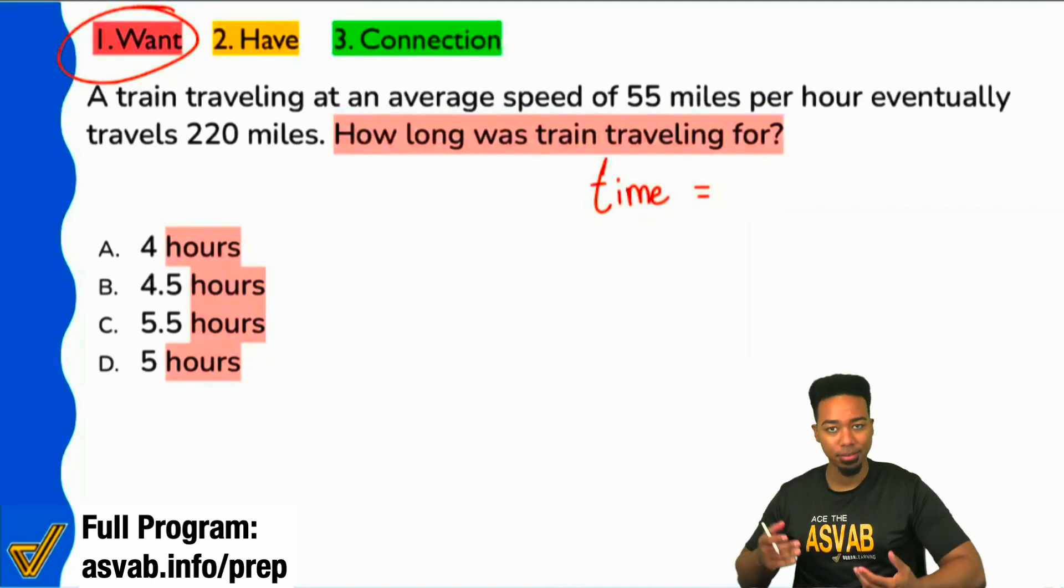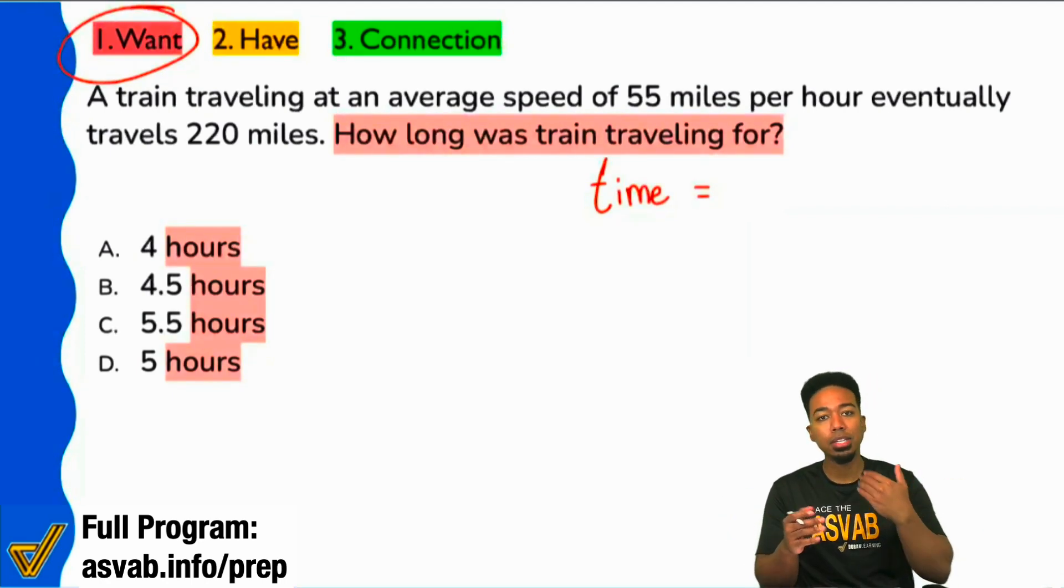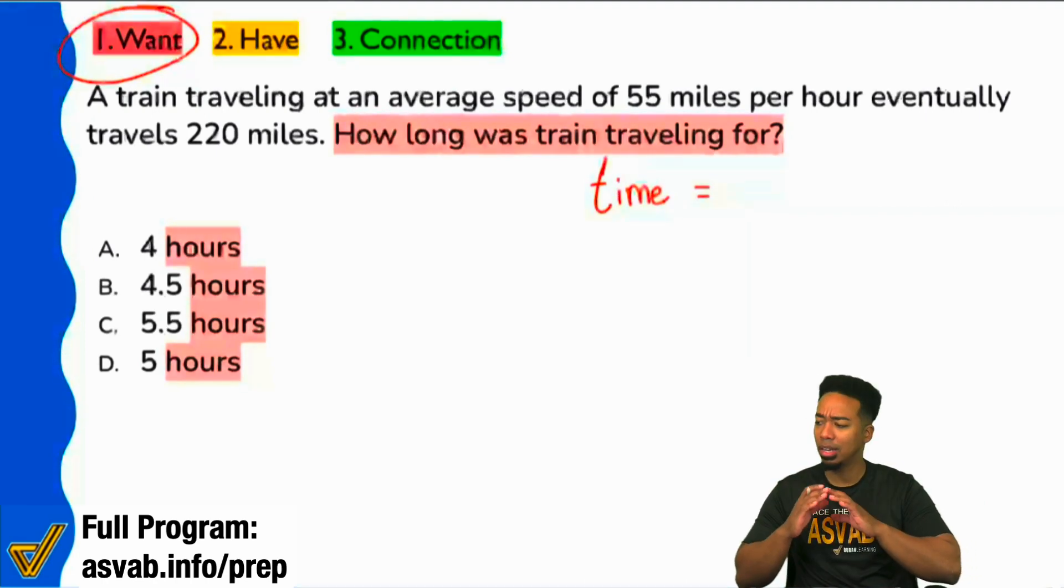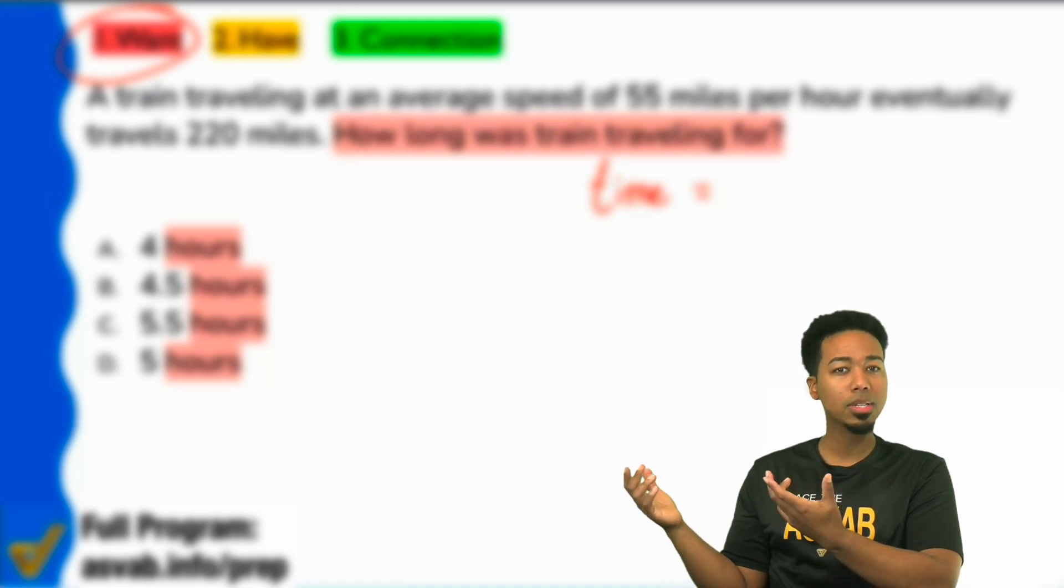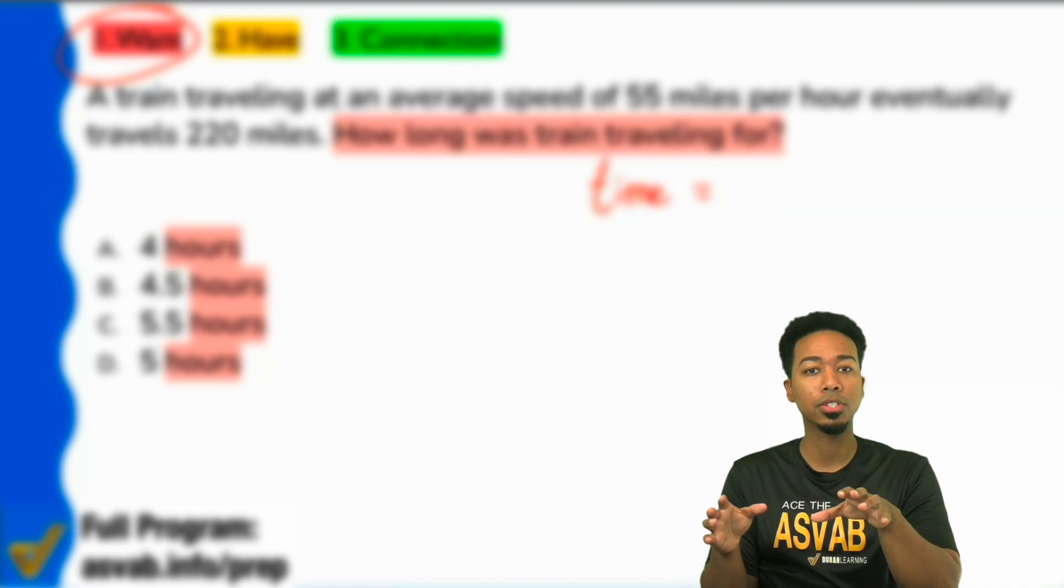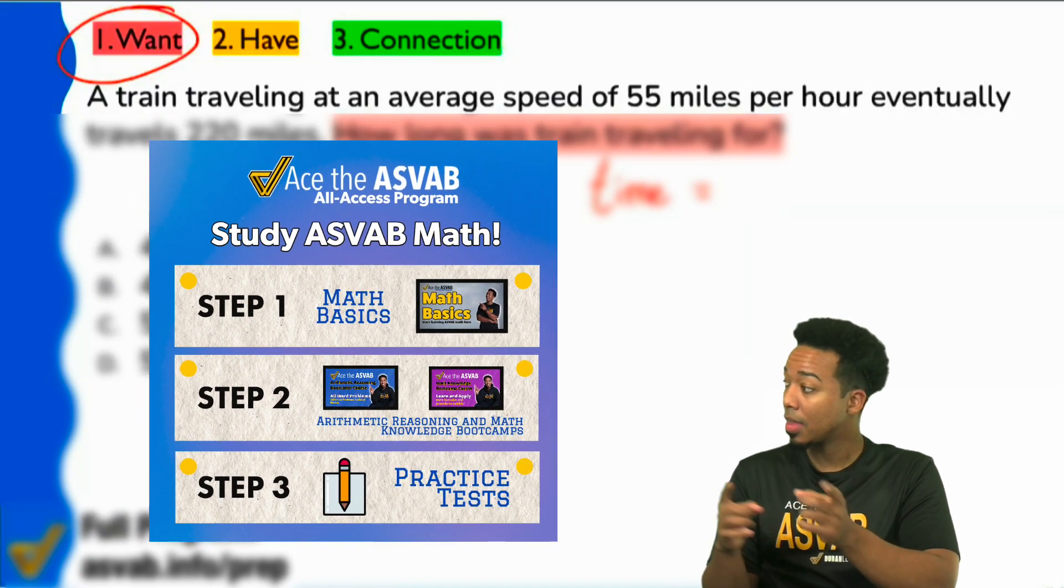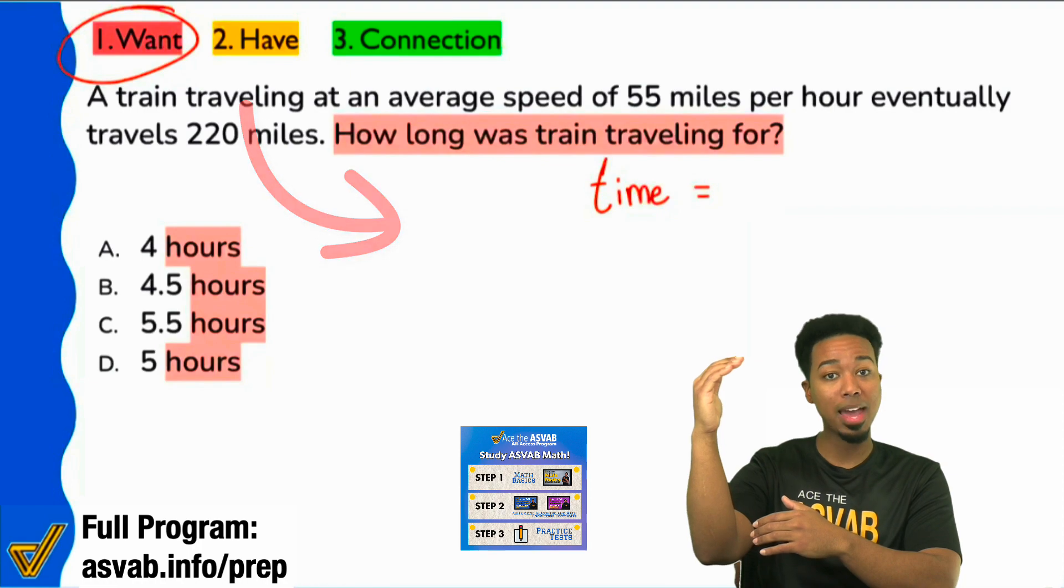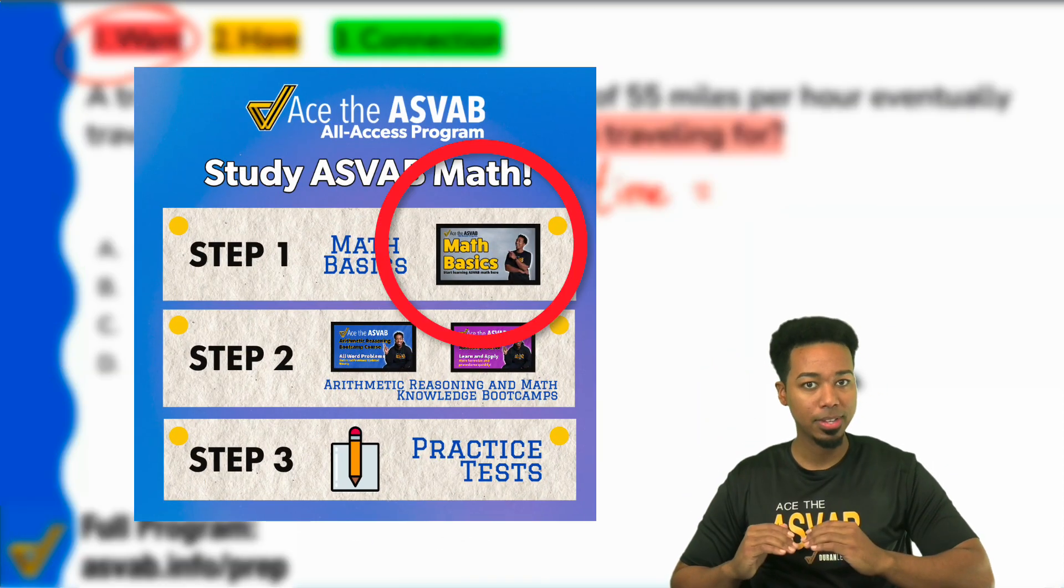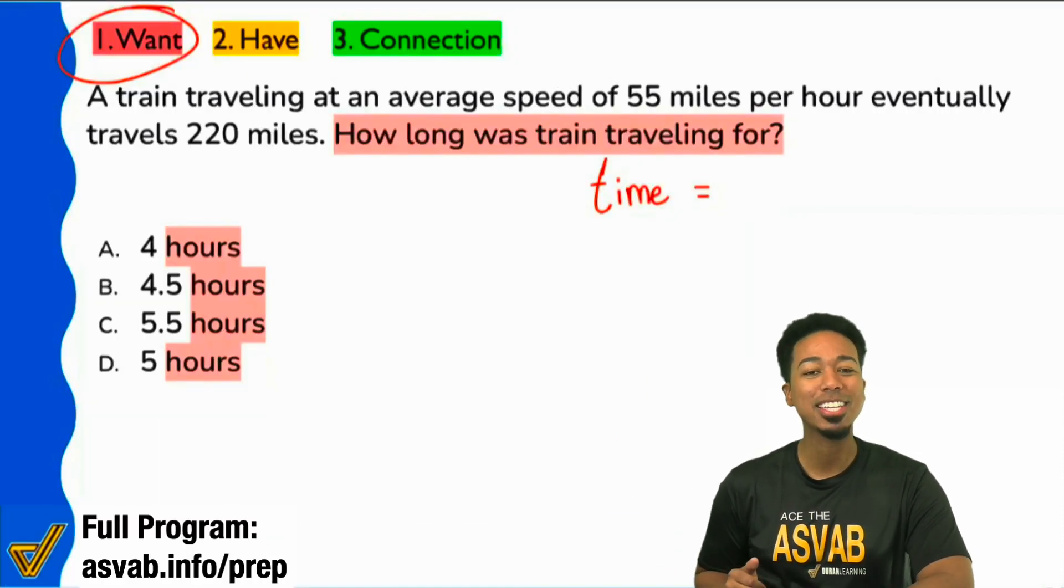Step two. What information do we have? This is the point of the problem where we're not just going to write everything down. We're going to interpret what it means. Remember that when you feel that something is complicated, it's most likely because you haven't set your foundations. Remember to start with the math basics course.